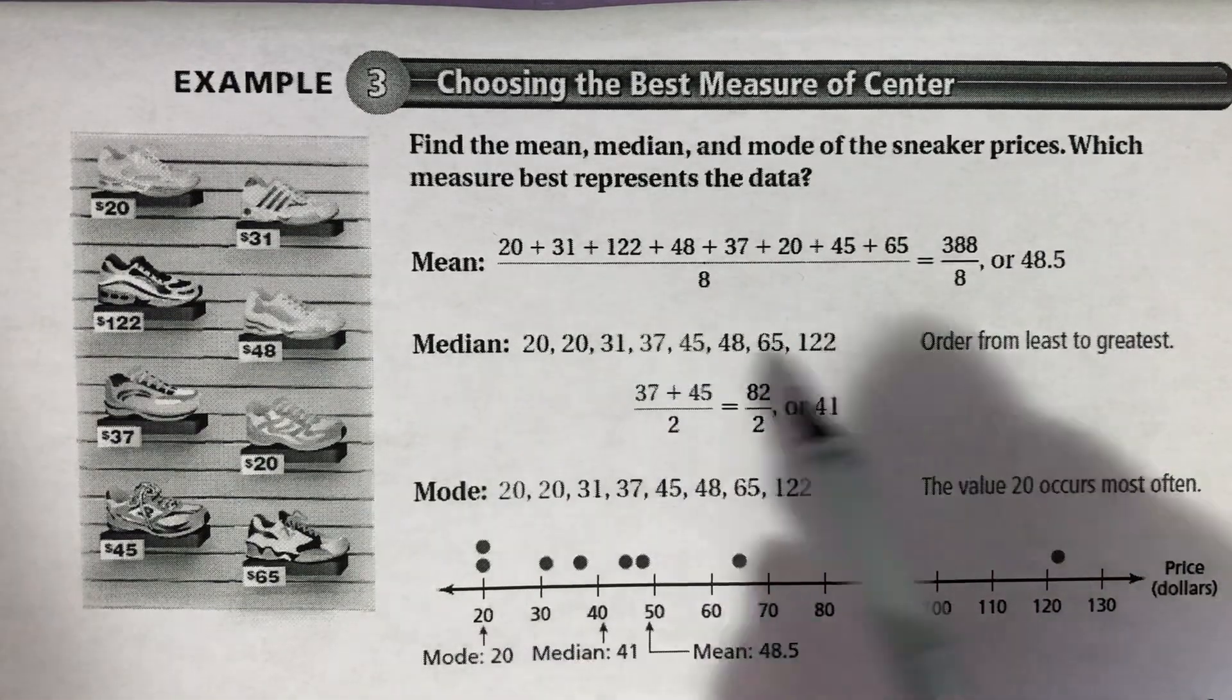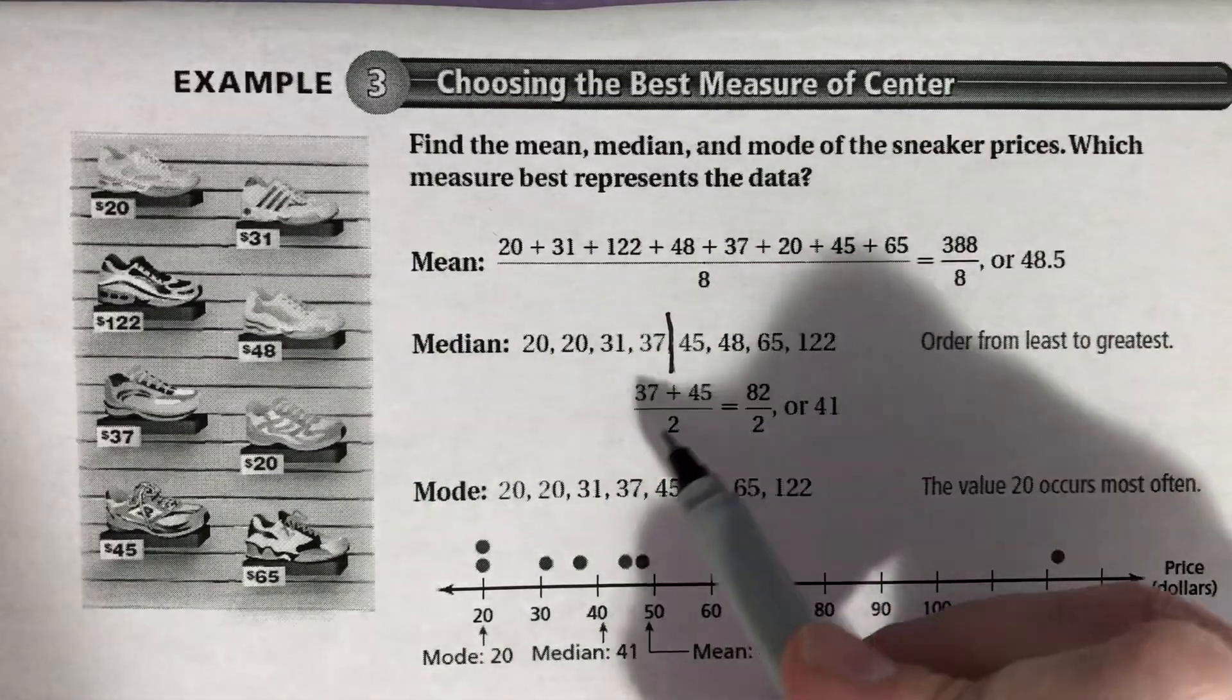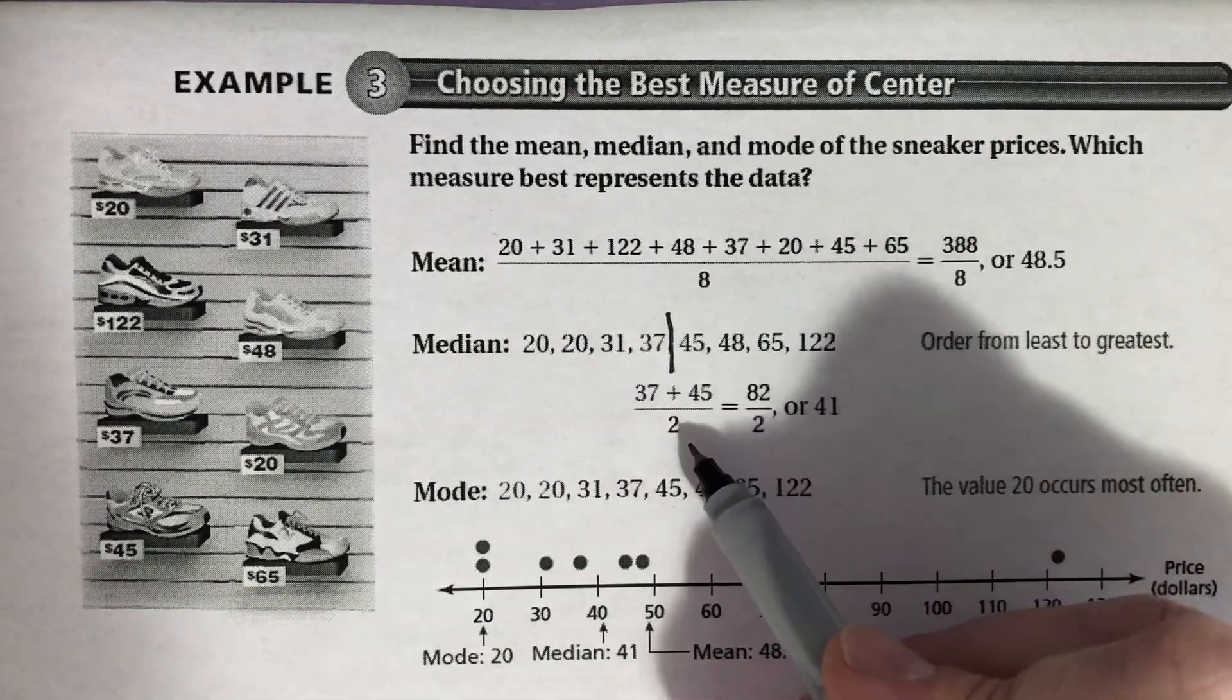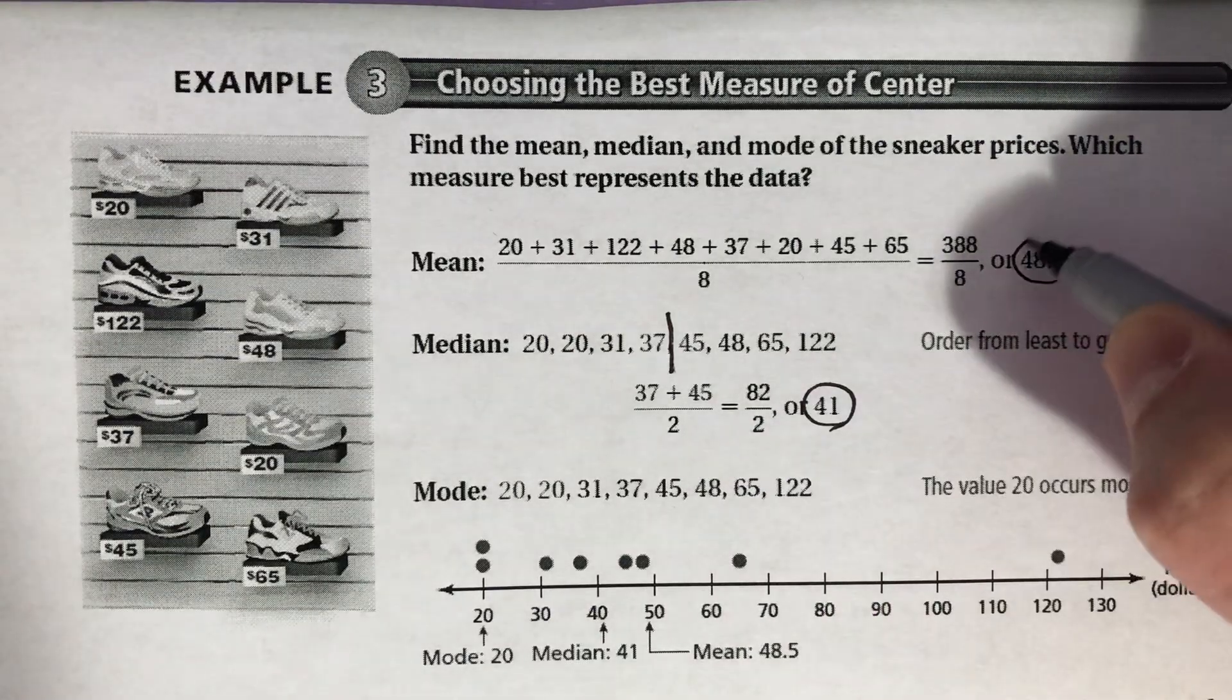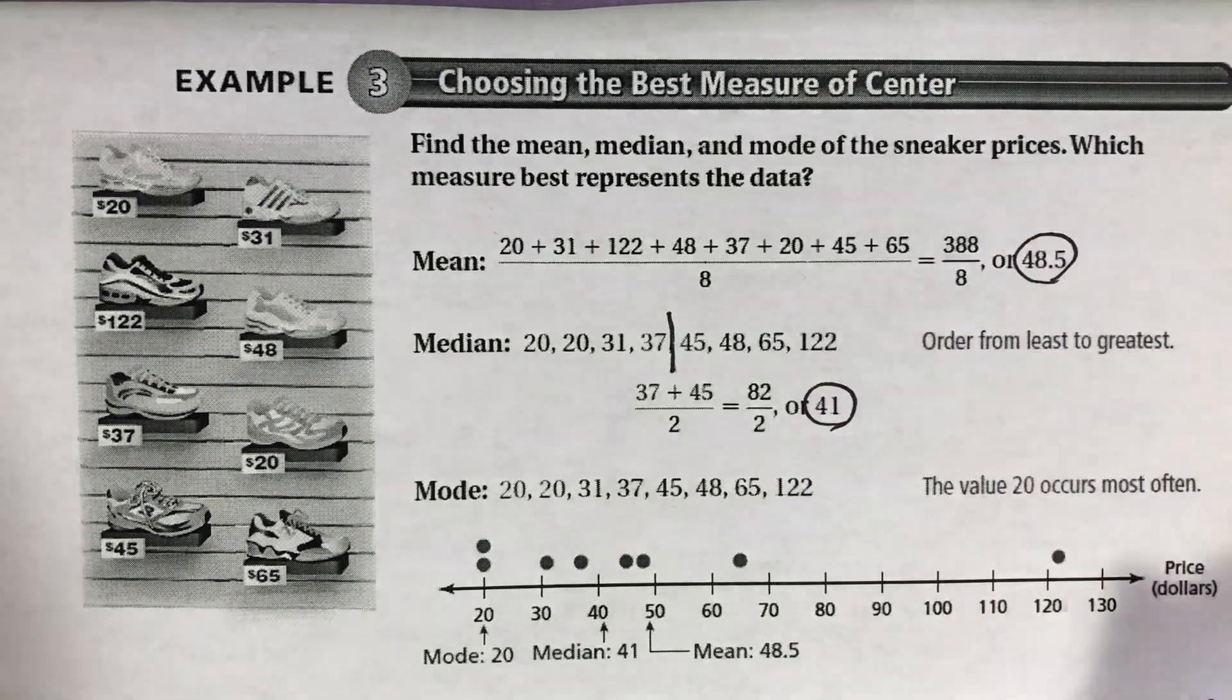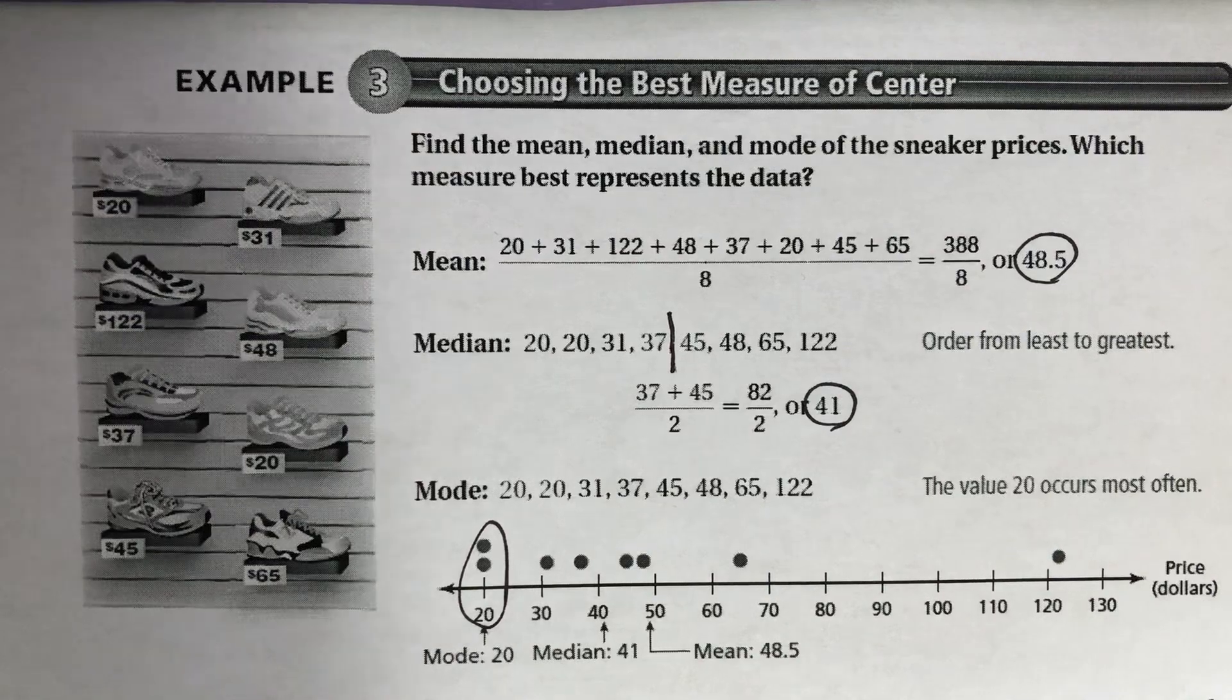They've added up all of the shoe prices and divided by eight to find out the average cost is $48.50. They put the numbers in order. And then they found the two middle numbers were 37 and 45. So they found the mean of that by adding that up and dividing by two and got a median of 41. So you can see 48.5 and 41.